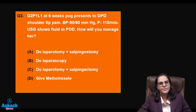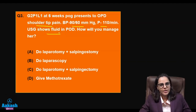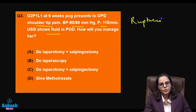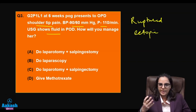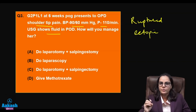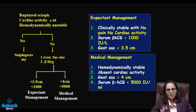Question three: a second gravida at six weeks period of gestation presents to OPD with shoulder tip pain. Vitals are unstable and ultrasound shows fluid in the pouch of Douglas. This is a clear-cut case of ruptured ectopic pregnancy. Shoulder tip pain occurs because blood irritates the diaphragm, causing referred pain. Fluid in the pouch of Douglas on ultrasound is the pathognomonic sign of a ruptured ectopic.